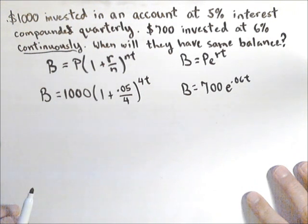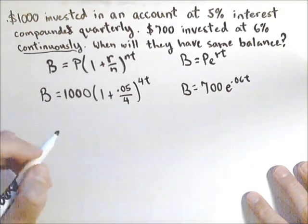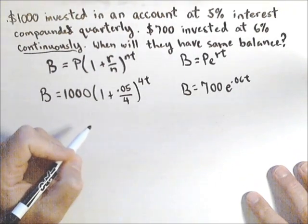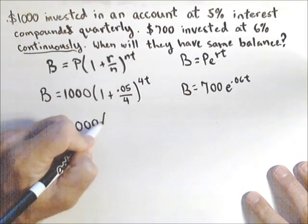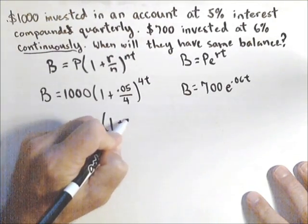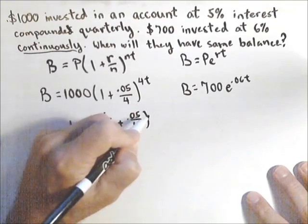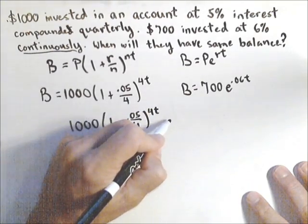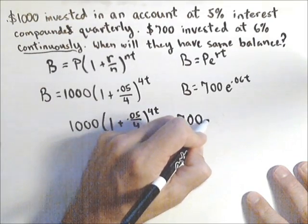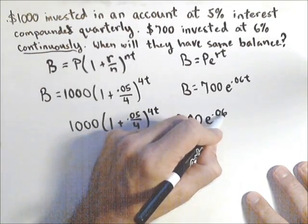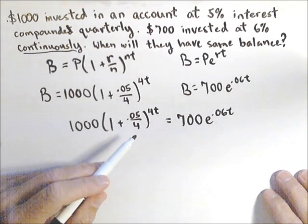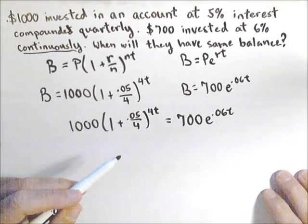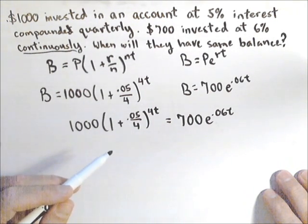Now, let's talk about how we can solve this algebraically. We're looking for where the two bank accounts are equal. So we're looking for where our account number 1, 1000 times 1 plus .05 over 4 to the 4t equals 700e to the .06t. So we need to solve this equation for t. Again, I'll show you how to do it in the graphing calculator afterwards, but I want to show you how to do it algebraically as well.